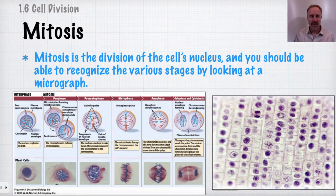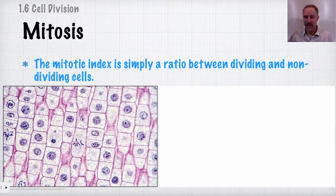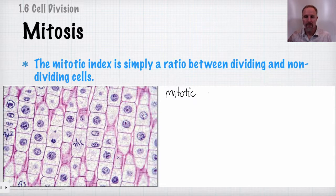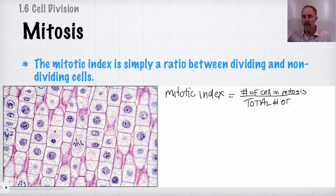You should be able to identify cells in varying stages of mitosis by looking at pictures or micrographs. The mitotic index is a useful calculation — it's simply a ratio between dividing cells and non-dividing cells. The formula is: mitotic index = number of cells in mitosis divided by the total number of cells.